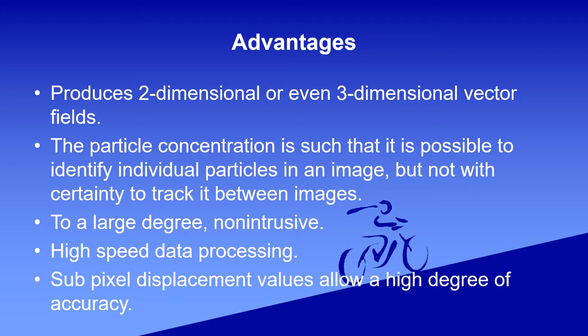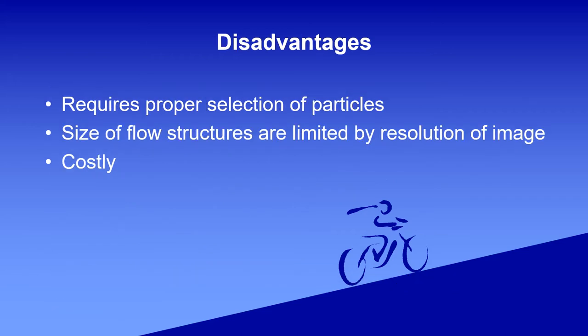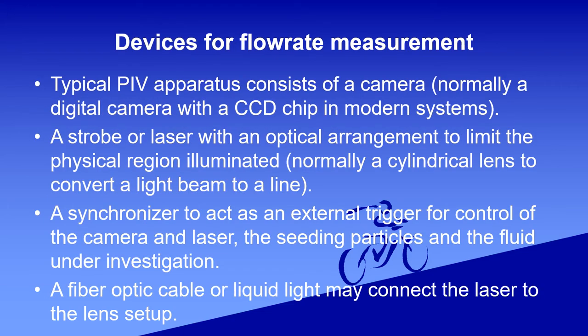PIV has several advantages. First, it produces two-dimensional or three-dimensional vectors. Second, the particle concentration is such that it is possible to identify individual particles in an image. Third, it allows for high-speed data processing to a large degree. The last advantage is sub-pixel displacement values which allow a high degree of accuracy.